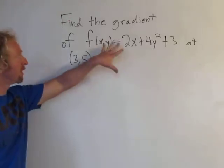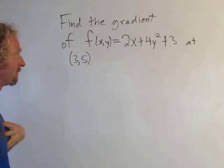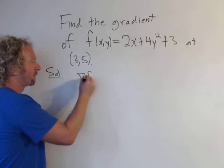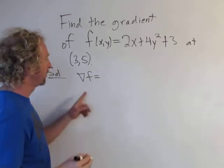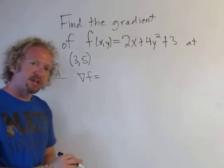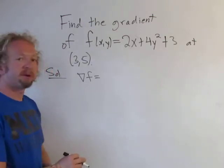So in this video we're going to find the gradient of this multivariable function at the point. So the gradient of f is simply the vector where each component is a partial derivative. We can use standard unit vector notation or we can use component form. Let's use component form.